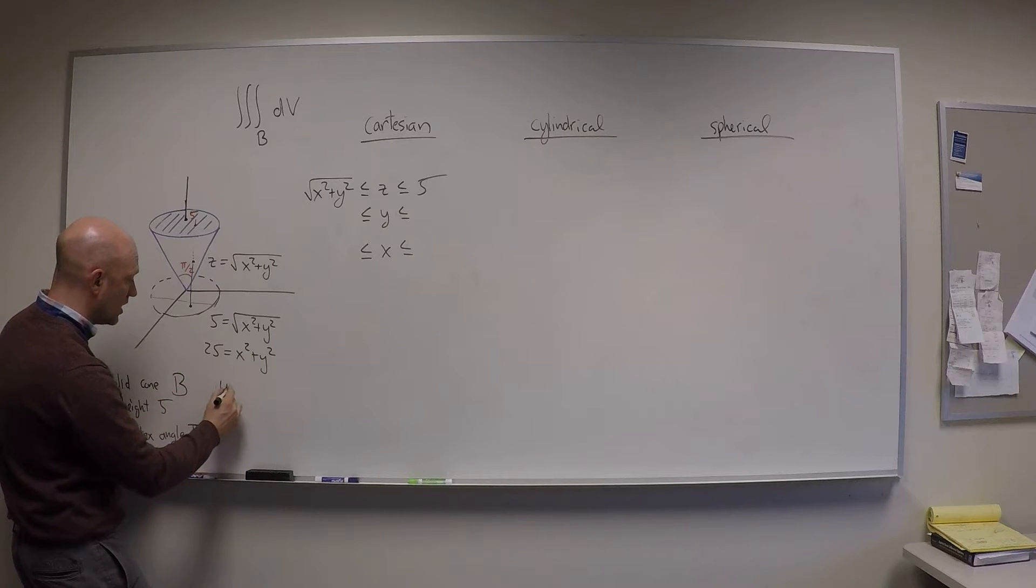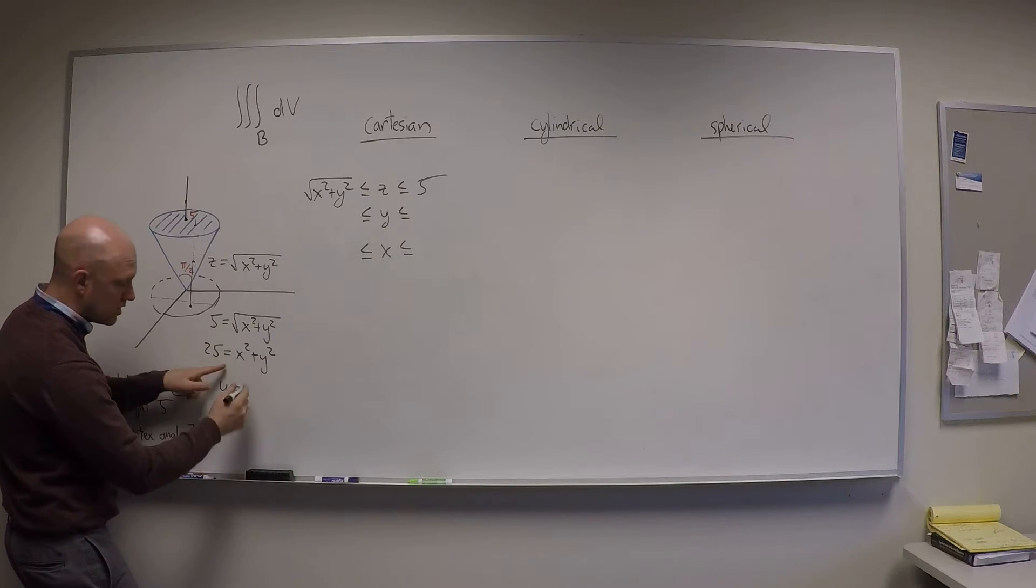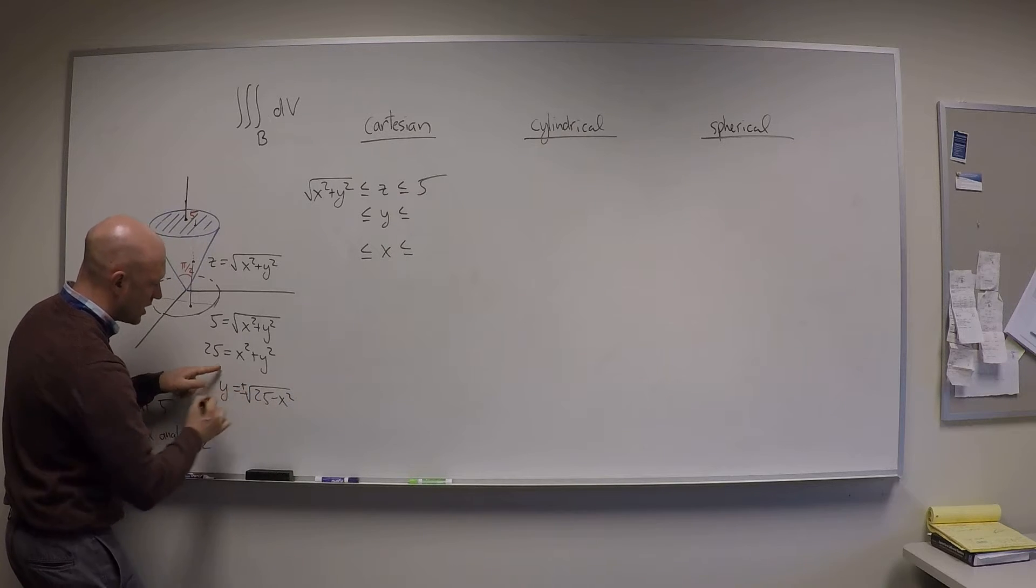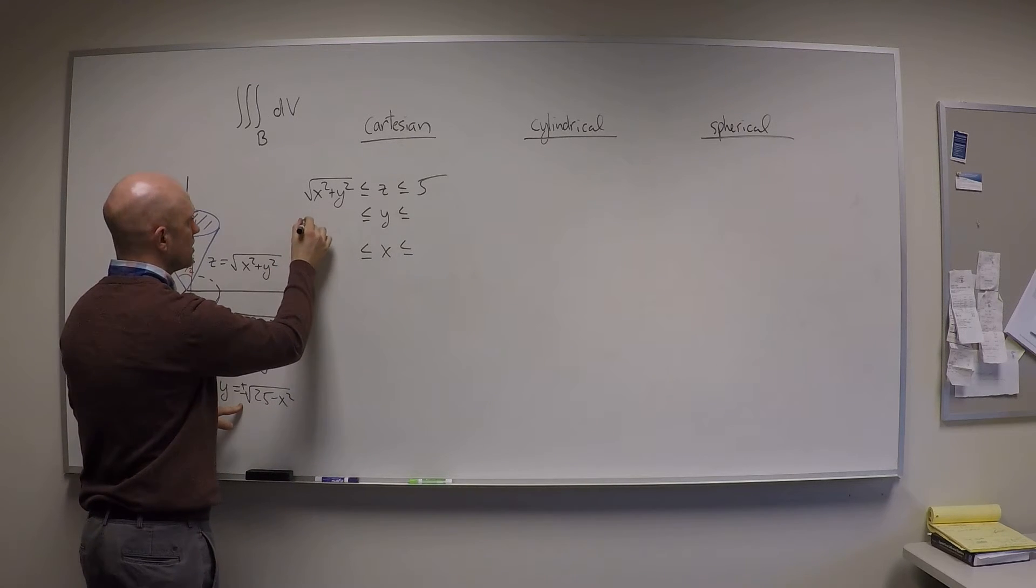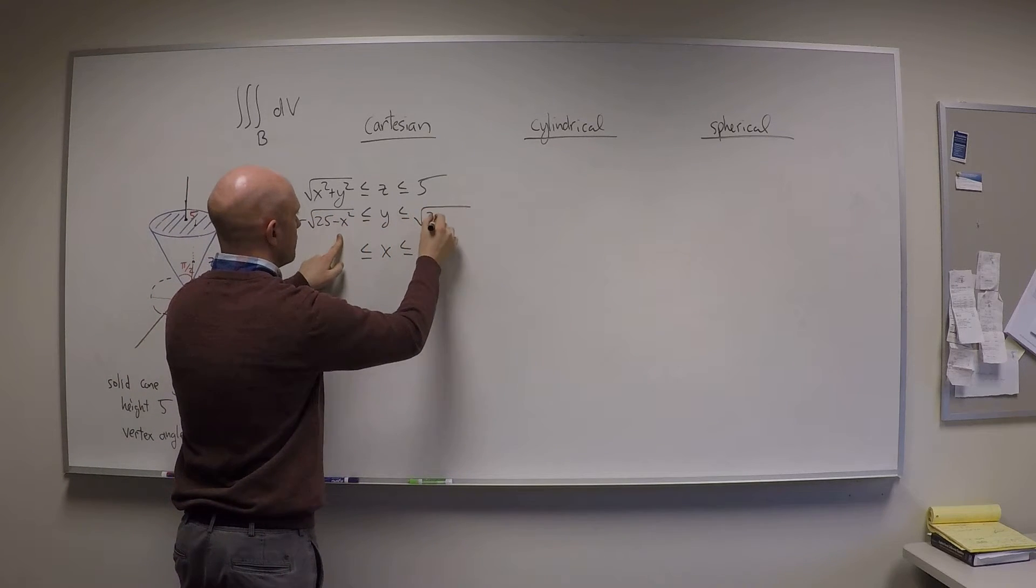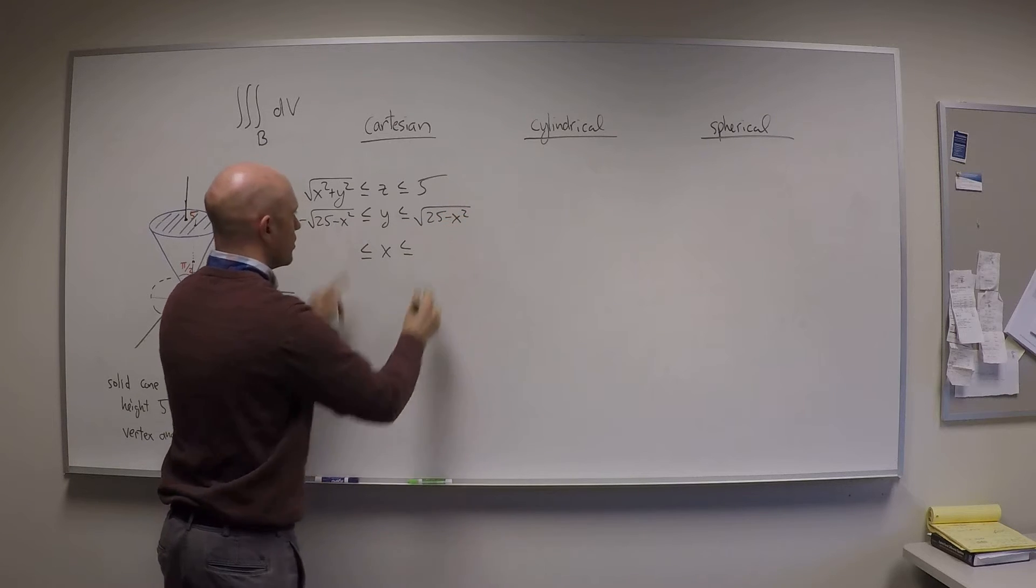And if I want to know what the bounds for y are, well, I fix myself in x, and I look at going along y from the bottom part of the circle to the top part of the circle. So that goes from, let's solve for y, I get y goes from square root of 25 minus x squared, and it's a plus or a minus. And the minus will end up on the left-hand side. And the plus will end up on the right-hand side.